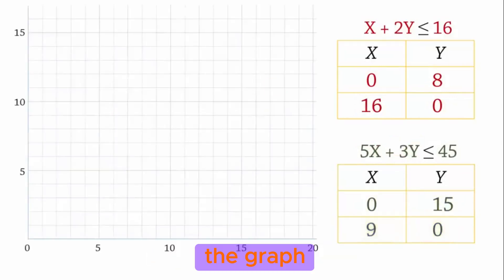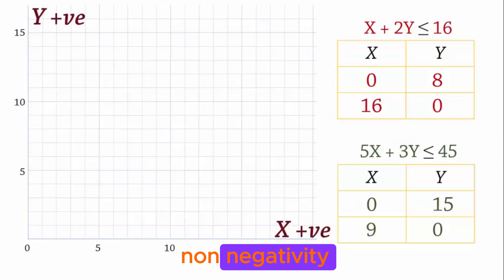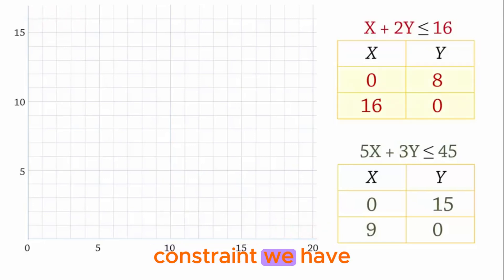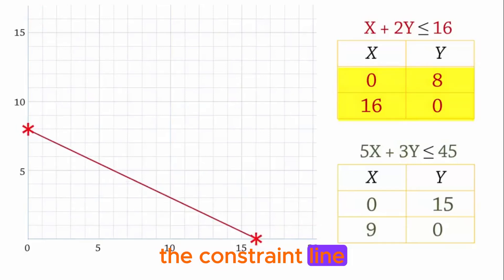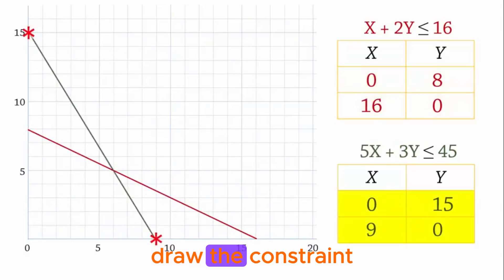When drawing the graph, we usually just stay in the first quadrant here, where both X and Y are positive because of the non-negativity constraints. So for the first constraint, we have the points 0, 8 and 16, 0. We join those two points for the constraint line. We do the same for constraint 2: 0, 15 and 9, 0, and then draw the constraint line.